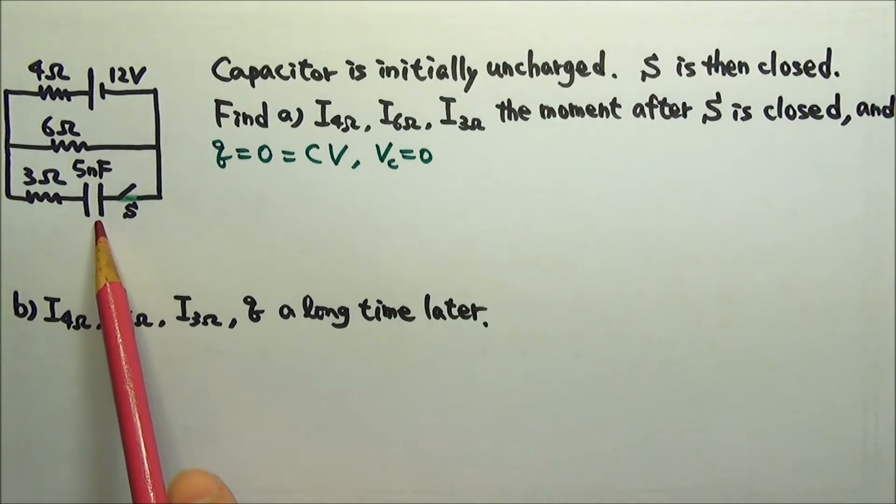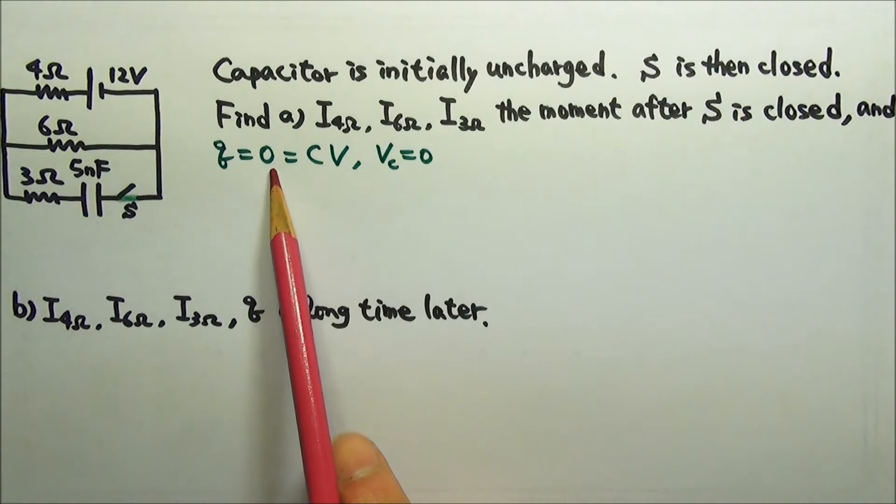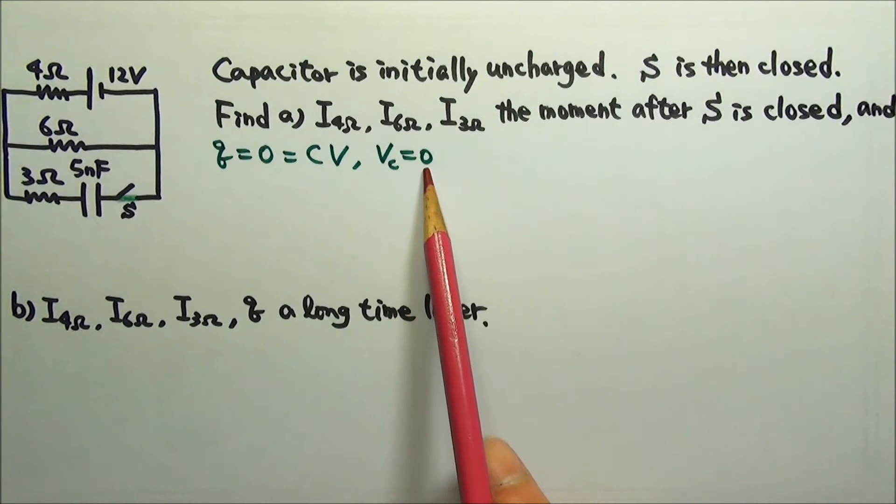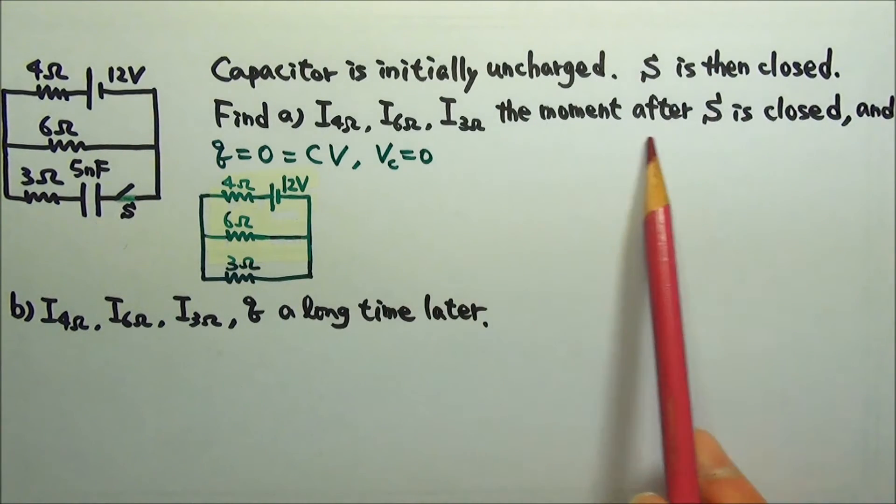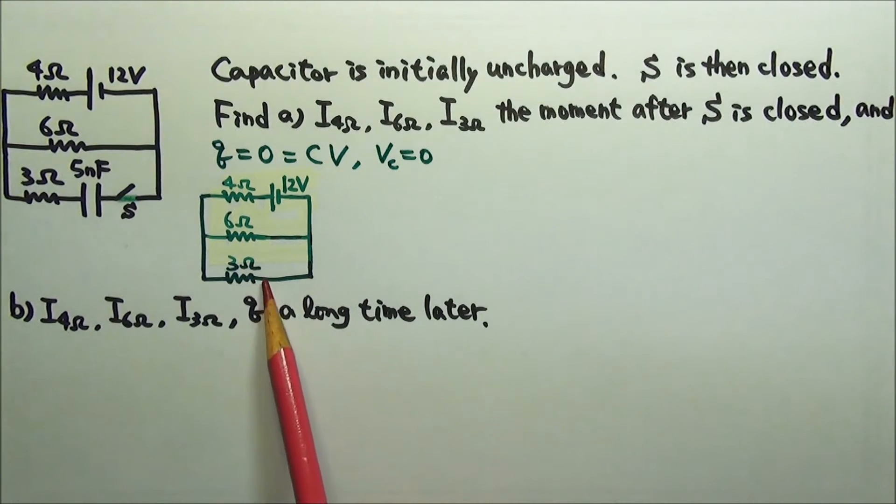Because it takes time to charge up the capacitor, the moment after the switch is closed, there is still no charge on the capacitor. And Q equals CV, that means that the voltage across the capacitor is zero. Therefore, for this particular moment, we can pretend that the capacitor is like a wire.